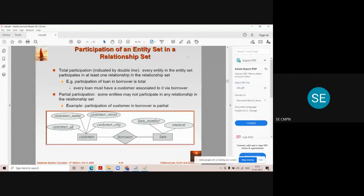So there are two types of participation that happens in entity sets in ER diagram. That is called as total participation and another is called as partial participation.